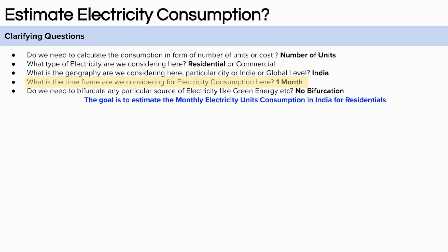The fourth question is about the timeframe — what timeframe are we considering for electricity consumption? Let's assume we are thinking about monthly unit consumption in India. The final question is about the type of electricity — whether we need any bifurcation between green energy or similar. Let's assume we are not going in that direction and are only considering normal electricity consumption. I think we have asked a considerable set of questions. If you think we could have asked more, please let me know in the comments.